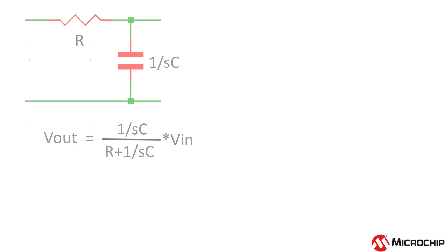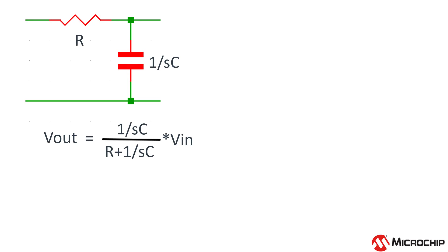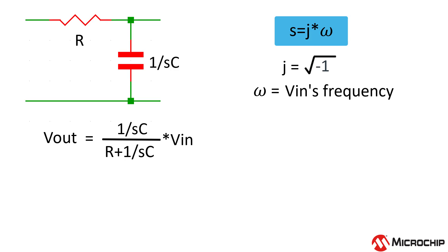No need to be alarmed — we've just slipped into the frequency domain here. All S means for our purposes today is J, the imaginary number, times omega, the frequency of the input voltage.